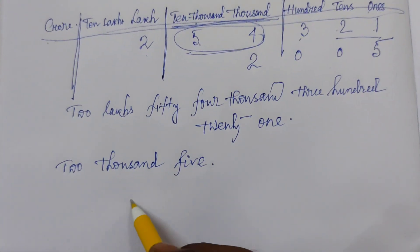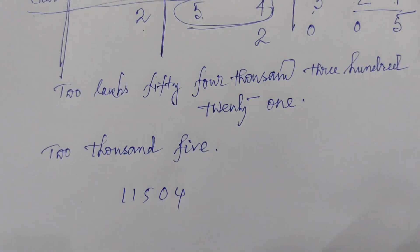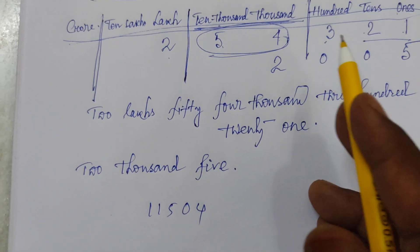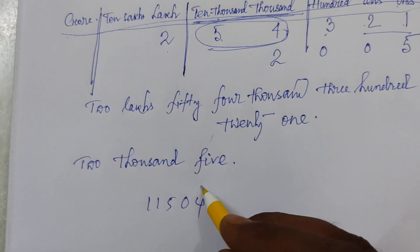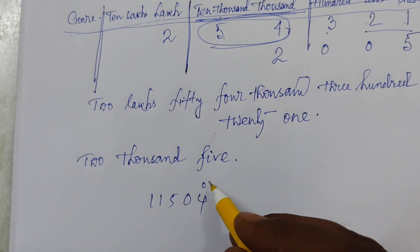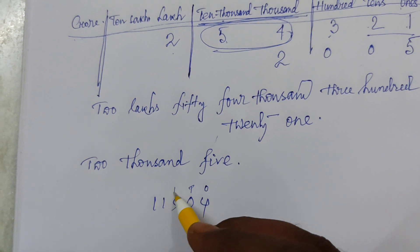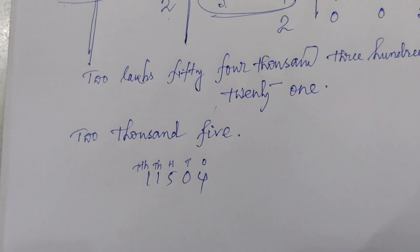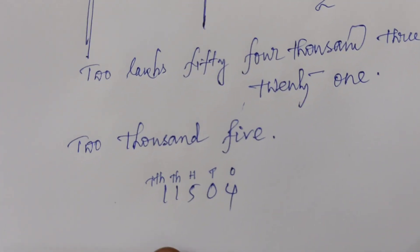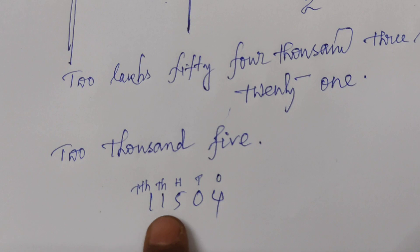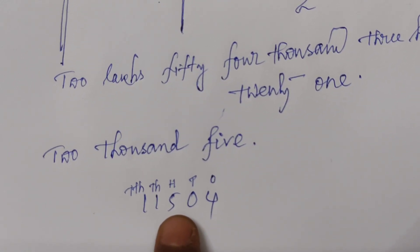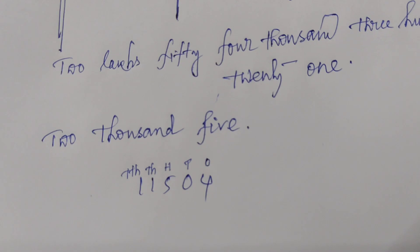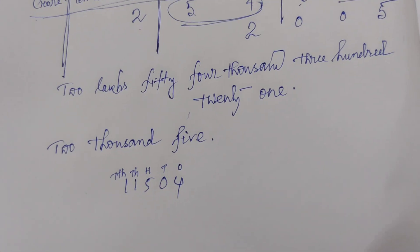Suppose any number is given — for example, 11504. You have to write the number name. First, put the chart in short form at the rightmost: O for ones, T for tens, H for hundreds, TH for thousands, TTH for ten thousands. You can see the total thousands is eleven — so the answer is eleven thousand five hundred four.